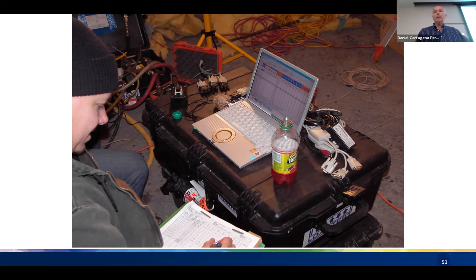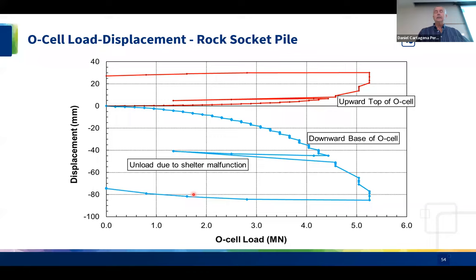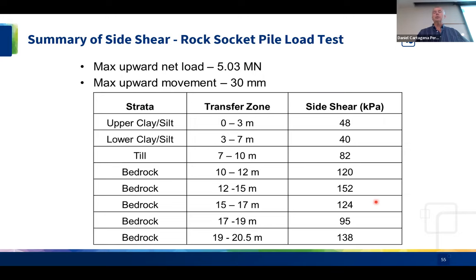Here is the results plot from the rock socket load test. The bottom plate movement indicates end bearing. At one point we had to stop and unload — related to the tent — then continued to completion. Shaft friction in red again shows much less movement than end bearing. The strain gauges gave us the following friction values: upper silt and clay 40 to 48 kPa, till 82 kPa, and bedrock 100 to 150 kPa.